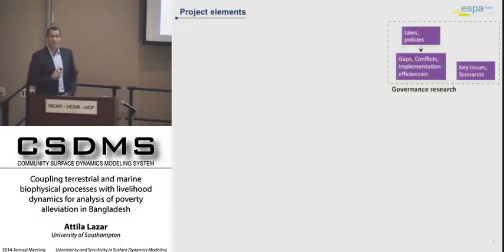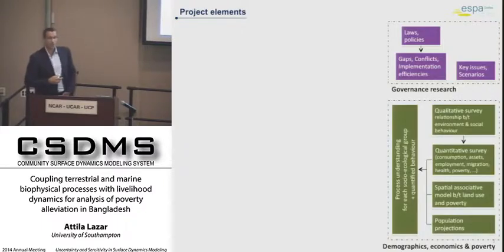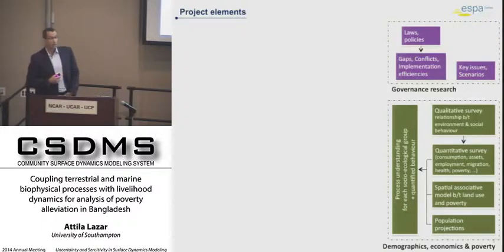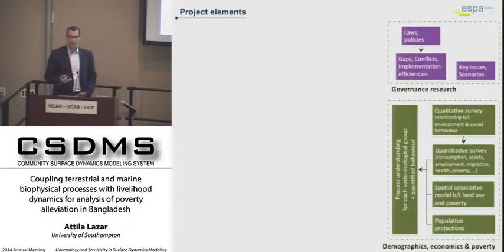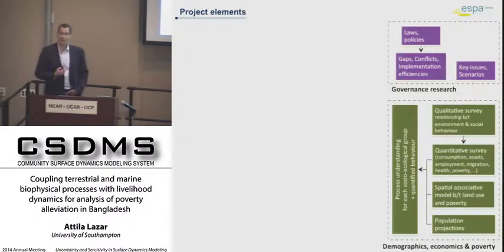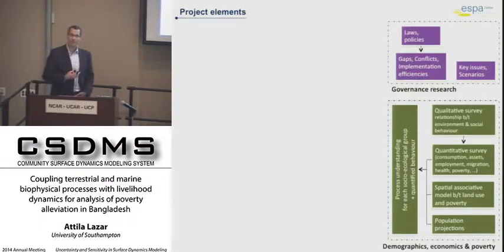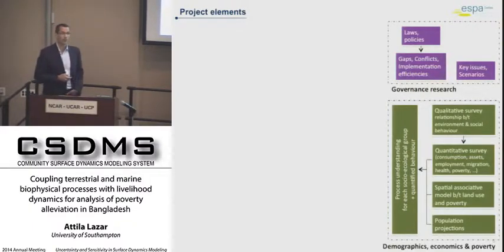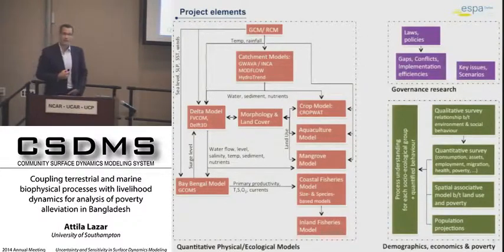They are also working together with the stakeholders during the entire project period. The second pillar is the social science — demographics and household economics. We collect primary data at household level, qualitatively and quantitatively about how they live. We also create population projections and a statistical associative model. All these feed into a dynamic and quantitative understanding of what is happening on the ground in terms of people and households.